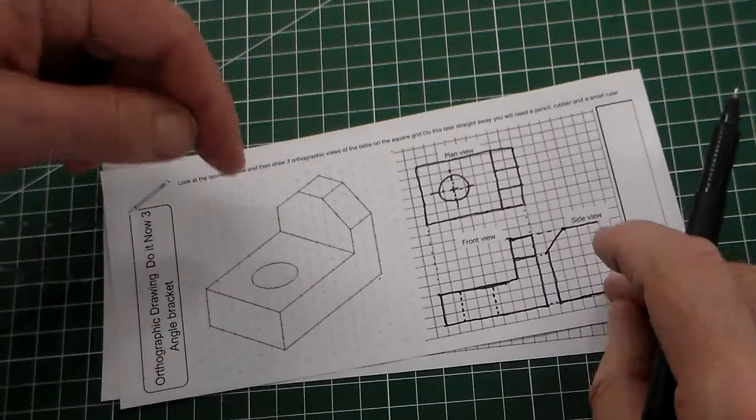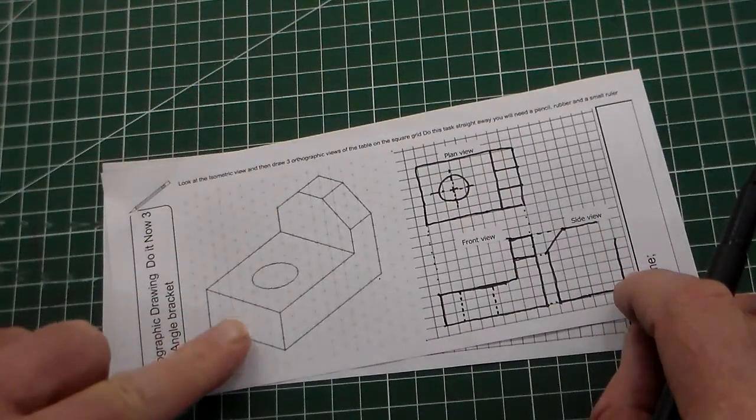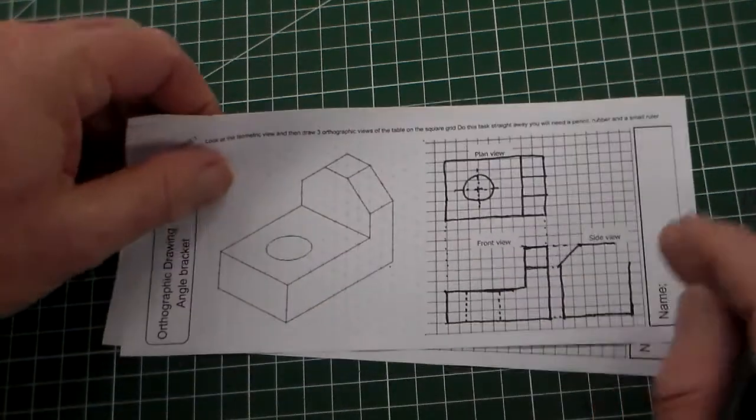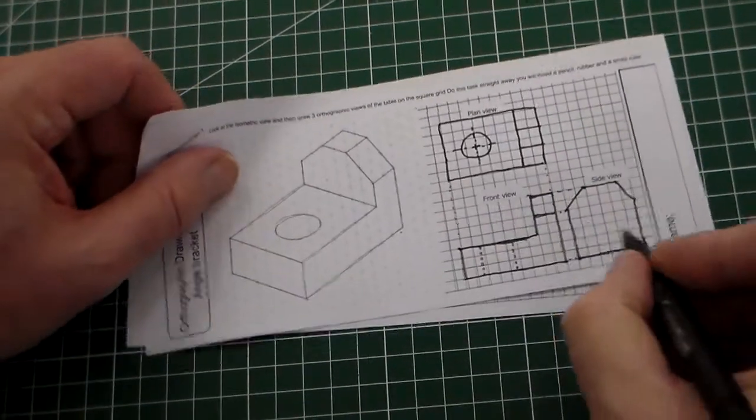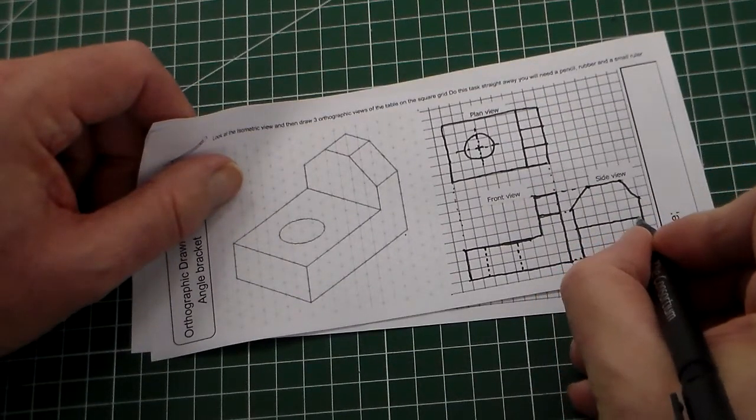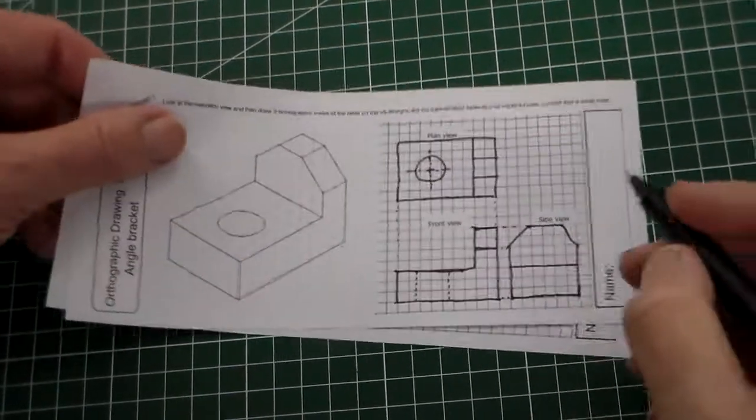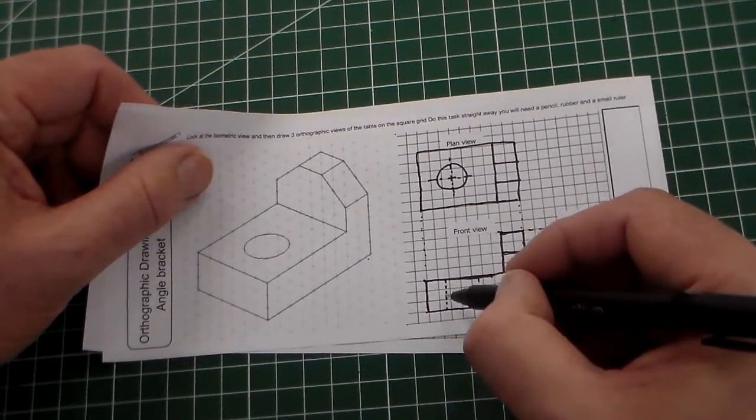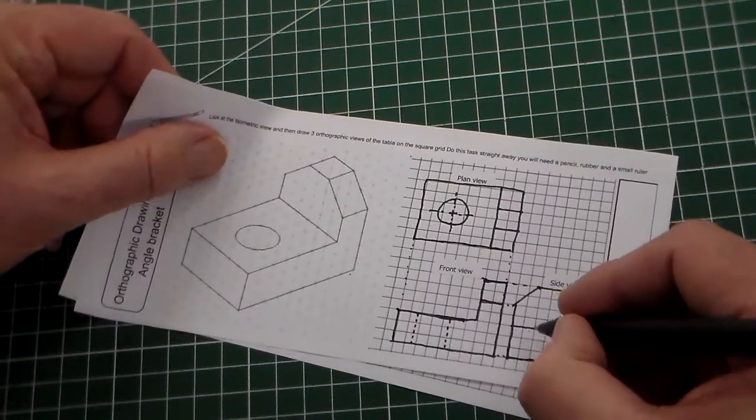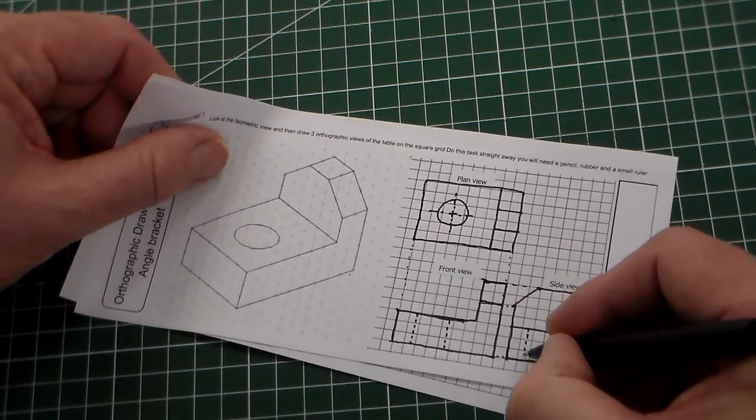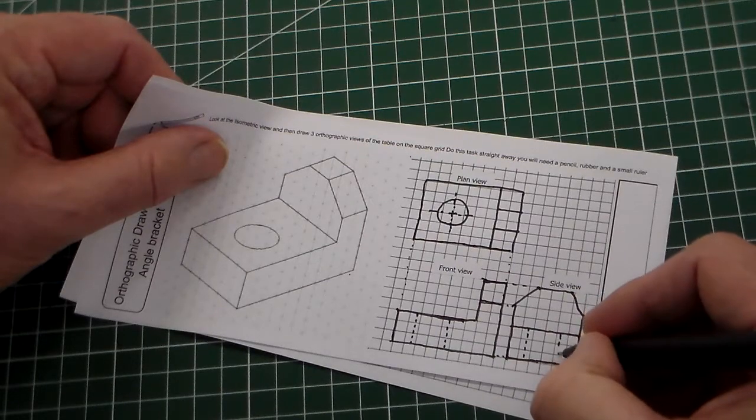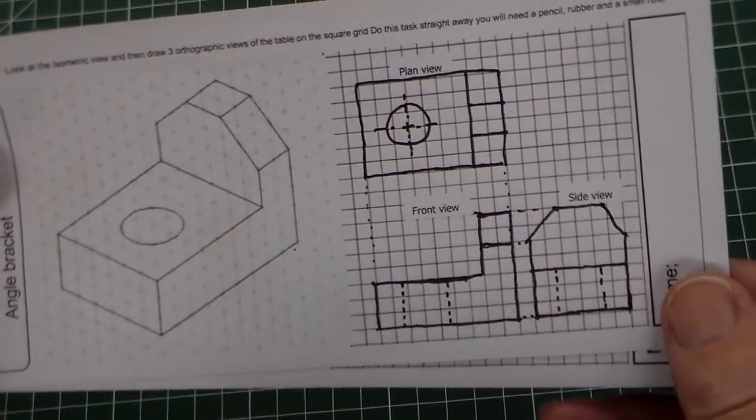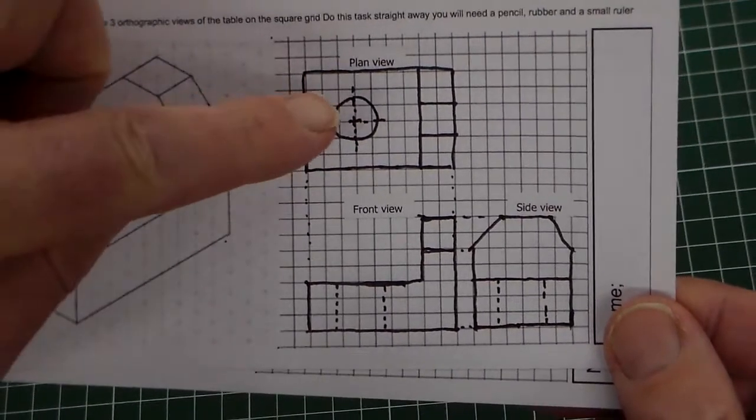In this view, we've got the plan view which looks down, the front view which is looking from this side, and then we've got the side view from here. And then again, the last detail: because we've got this hole that goes through the object, it's hidden detail there, and it's also hidden detail on this view. So there's our three views: a plan view, a front view, and a side view, orthographic views of the angle bracket.